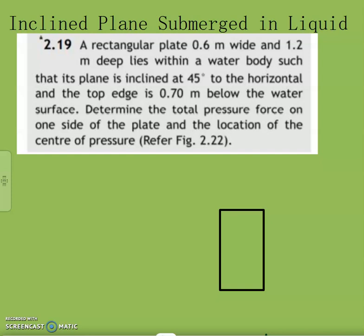Inclined plane surface submerged in a fluid. The given problem has a rectangular plate 0.6 meter wide and 1.2 meter deep, lying within a water body such that its plane is inclined at 45 degrees to the horizontal, and the top edge is 0.7 meter below the water surface. Determine total pressure on one side of the plate and location of center of pressure.